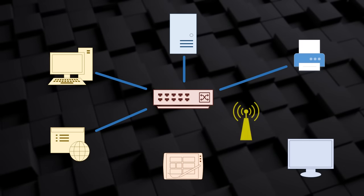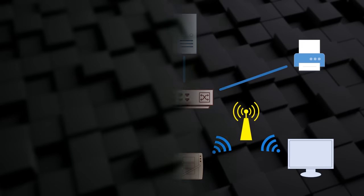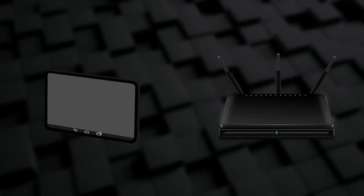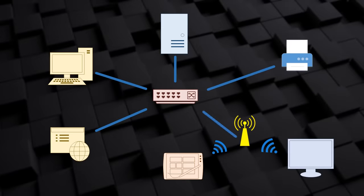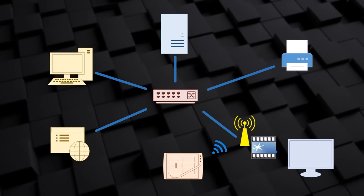We can also connect devices wirelessly. A common way to do this is to use a wireless access point. A wireless network like this is also called Wi-Fi. An example of this is if you have a tablet — it is impractical to cable it in, so wireless is a good option. The access point is like a switch without cables. More than one device can connect to the access point at a time, but without the messy cabling. The access point can also be connected to the switch with a cable, so wired and wireless devices can all be part of the same network.